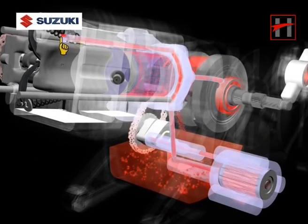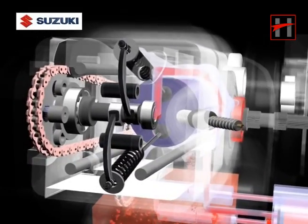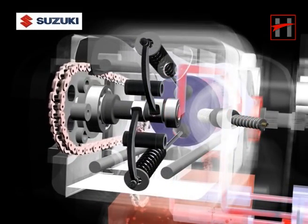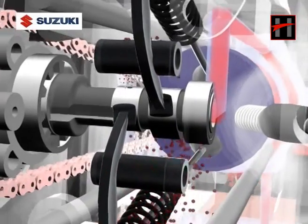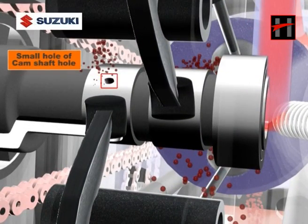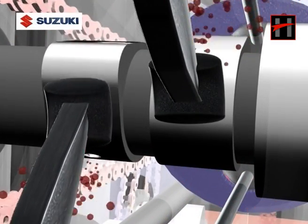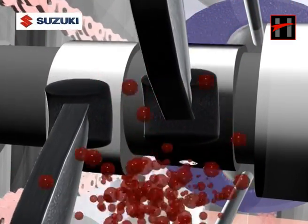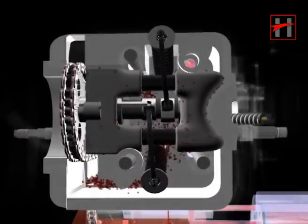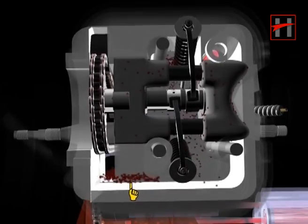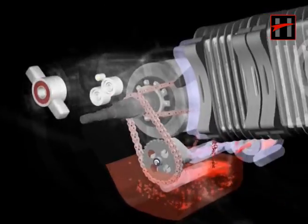Forced oil comes out at cylinder head from small holes of camshaft lobe which lubricates the valve mechanism. Finally the oil drops into the oil sump after lubricating the cam.